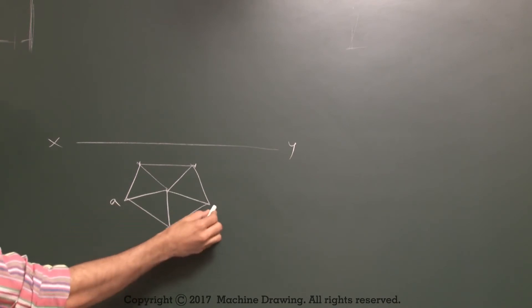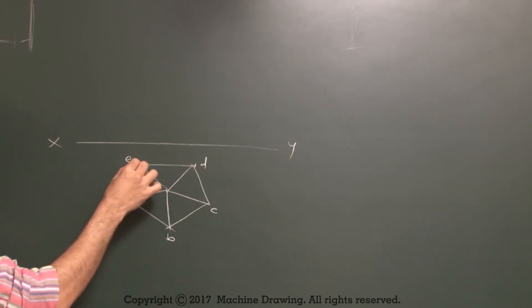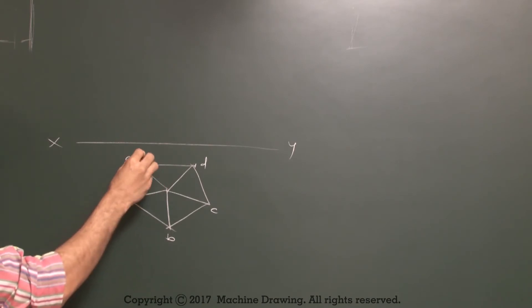This is A, B, C, D, E. Side of the pentagon is 30mm.